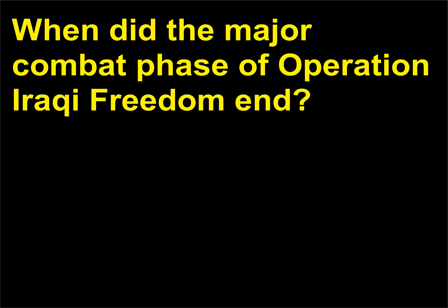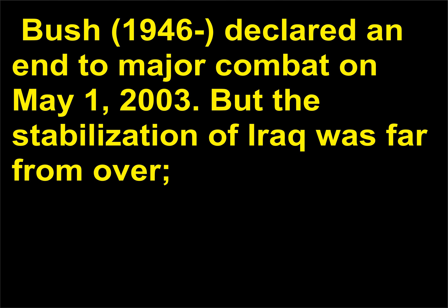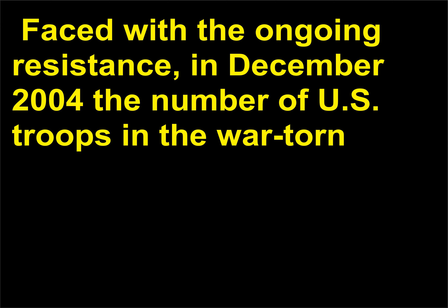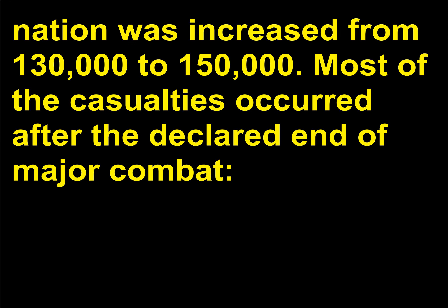When did the major combat phase of Operation Iraqi Freedom end? President George W. Bush, 1946, declared an end to major combat on May 1, 2003. But the stabilization of Iraq was far from over. The fighting continued more than two years later, the result of an increasingly violent Iraqi insurgency. Faced with the ongoing resistance, in December 2004 the number of US troops in the war-torn nation was increased from 130,000 to 150,000.